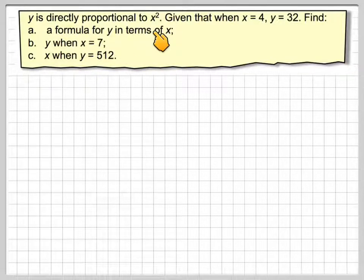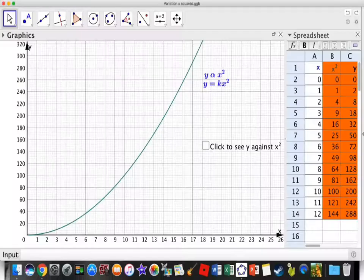We can see here that this is a non-linear proportion, but we can actually show by using graphs that Y is directly proportional to X squared. Let's have a look at this graph here.